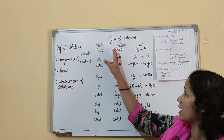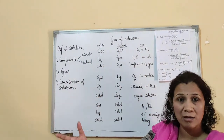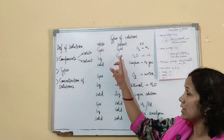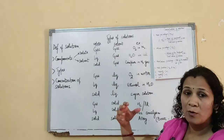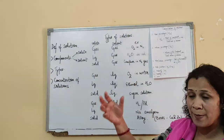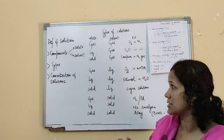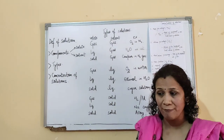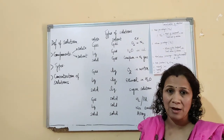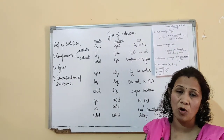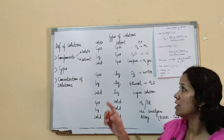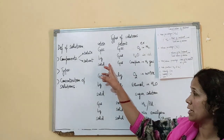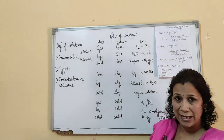For gas in gas, the example is air mixture. For liquid in gas, we say water vapors suspended in air. For solid in gas, if you take a piece of camphor and keep it in atmosphere or in some gaseous mixture, camphor in nitrogen gas would be an example of solid in gas.